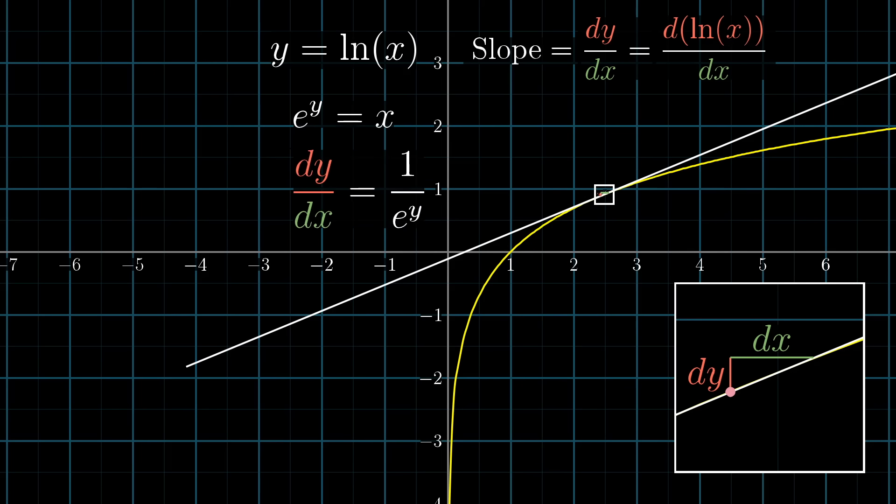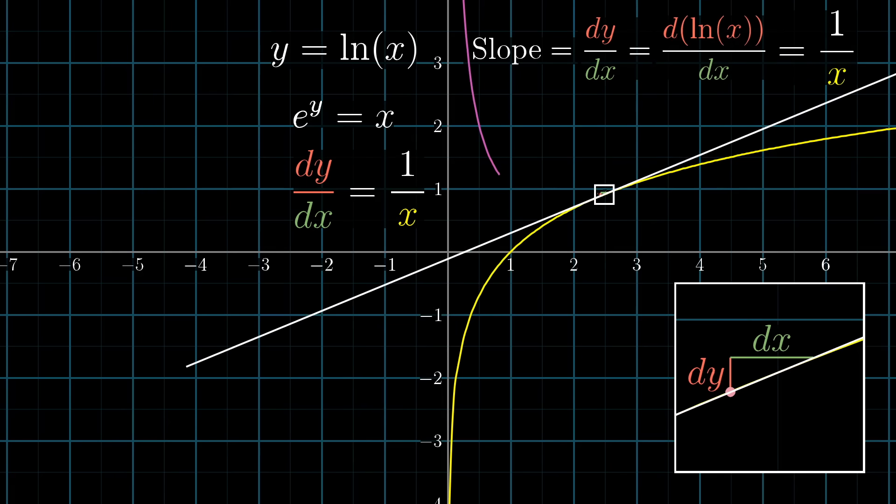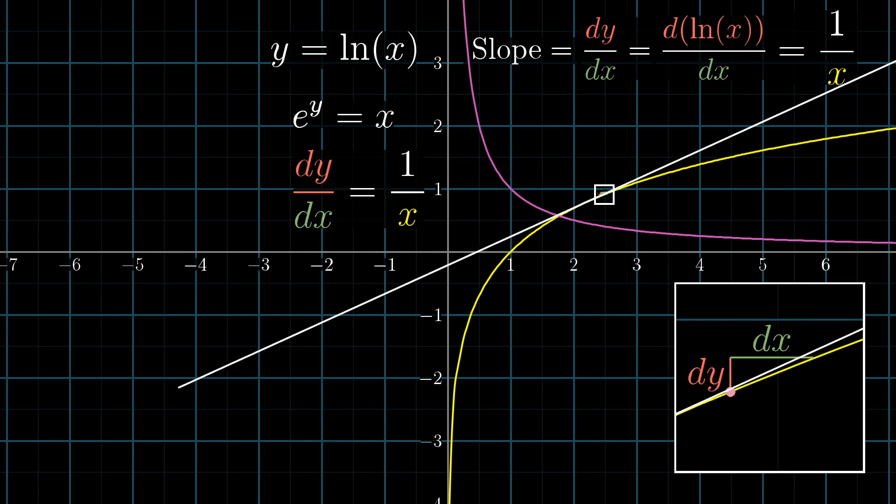Rearranging, that means that dy divided by dx, the slope of our graph, equals 1 divided by e^y. And when we're on the curve, e^y is, by definition, the same thing as x, so evidently this slope is 1 divided by x. And of course, an expression for the slope of a graph of a function, written in terms of x like this, is the derivative of that function, so evidently the derivative of ln(x) is 1 divided by x.